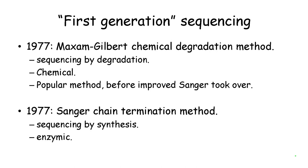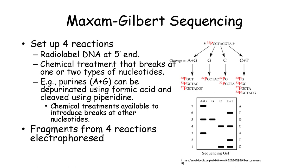The Maxam-Gilbert method relied on chemical degradation and had a brief popularity before Sanger's chain termination method took over. Maxam and Gilbert started with DNA molecules that were radioactively labeled at their 5' end so that the resulting fragments could be visualized on a gel. They used four chemicals that could cleave a DNA molecule at certain nucleotides. For example, formic acid could break the DNA at an adenine or guanine nucleotide. When these fragments were run in parallel on a gel, one could deduce the sequence of nucleotides.